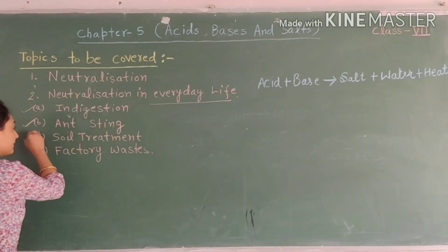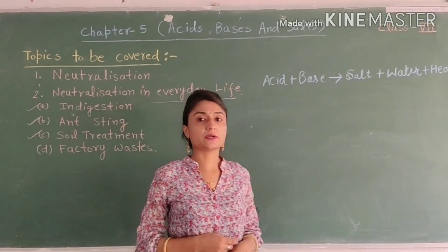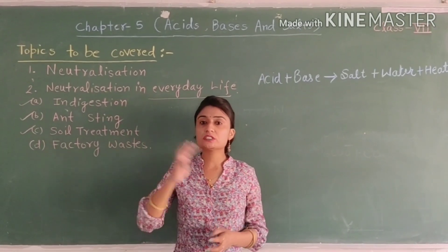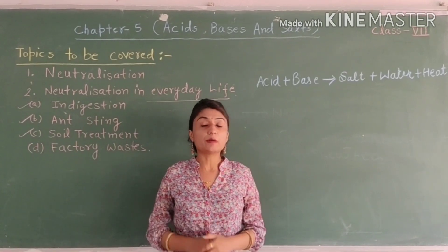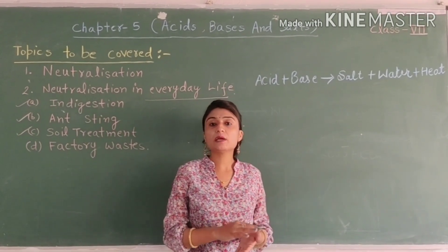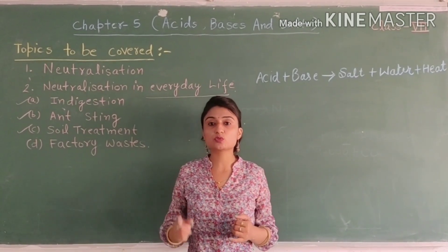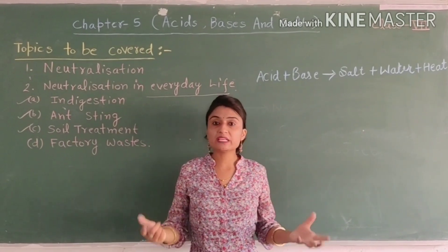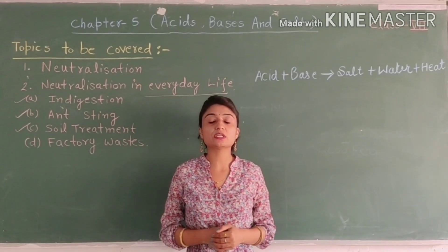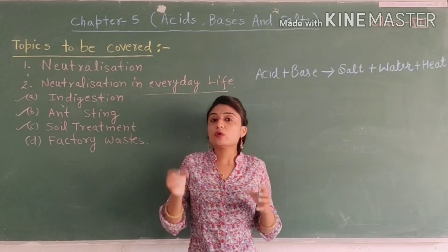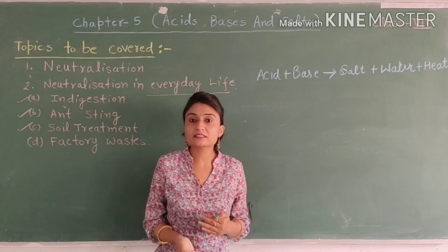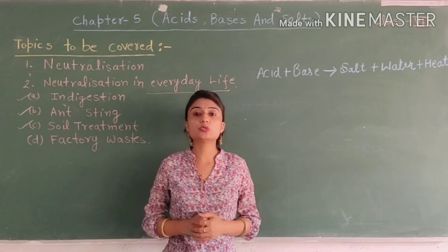The next example is soil treatment. Farmers use fertilizers to increase crop yield. Sometimes the soil becomes acidic or basic, but the soil needs to be neutral for good growth. For acidic soil, we can use organic matter, which releases bases to neutralize the acidic effect and make the soil neutral.